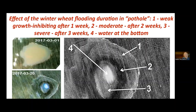Here we show the suppression of winter wheat plants after different flooding durations. After one week of flooding, suppression is weak — only growth inhibition. After two weeks, it is moderate. After three weeks of flooding, suppression is strong.